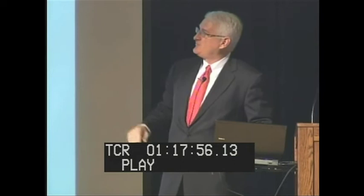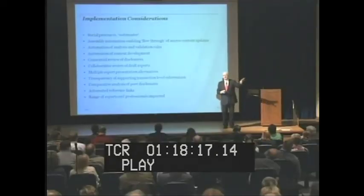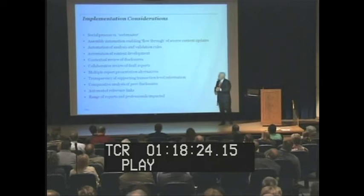These are the implementation considerations — the key drivers for getting the biggest bang for the benefit. The first is the social process. If you give it to one person — the webmaster — you're not going to get the bang. You have to create as many people using these applications as possible because the tax guys are going to get just as big a benefit out of assembling their information as you are. The automation — enabling a flow-through of sources — so whenever something in the source updates, you want that to flow through your reports. It's not just about Ks and Qs; it's literally about any report you generate.